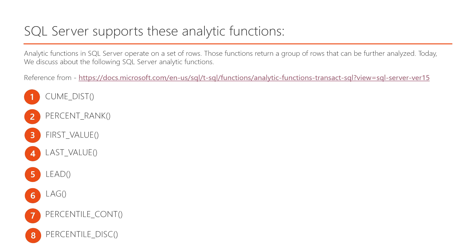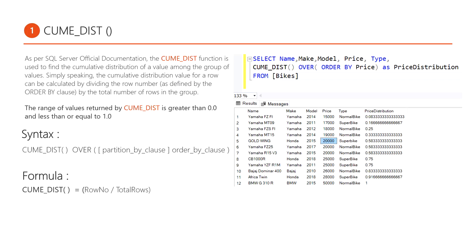Analytic functions in SQL Server operate on a set of rows. Those functions work on a group of rows that can be further analyzed. Today I have discussed only the CUME_DIST function. As per SQL Server official documentation, the CUME_DIST function is used to find the cumulative distribution of a value among a group of values.